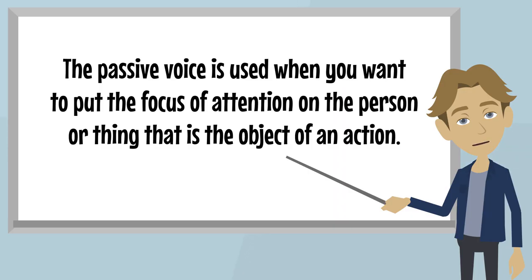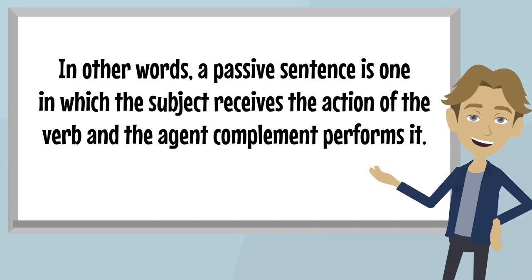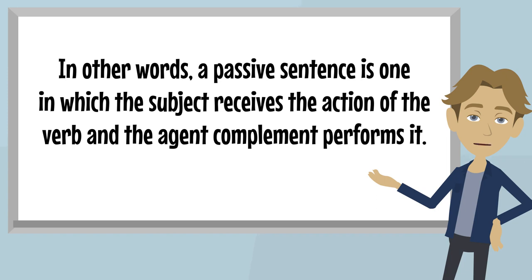The passive voice is used when you want to put the focus of attention on the person or thing that is the object of an action. While in the active voice, the focus of attention is on the person or thing that performs the action. In other words, a passive sentence is one in which the subject receives the action of the verb and the agent complement performs it.